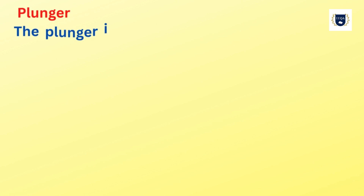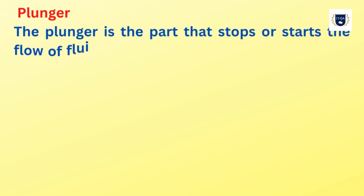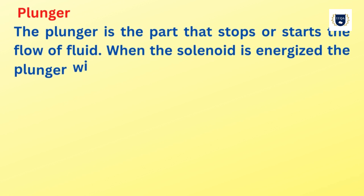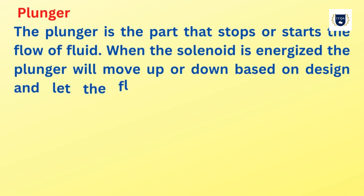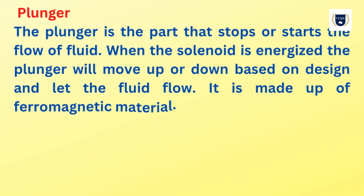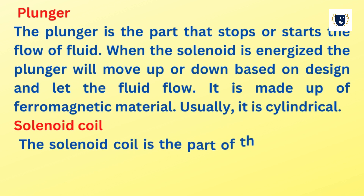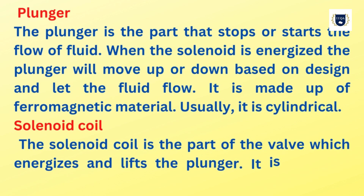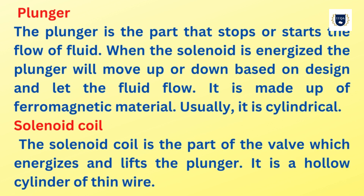Plunger: the plunger is the part that stops or starts the flow of fluid. When the solenoid is energized, the plunger will move up or down based on design and let the fluid flow. It is made up of ferromagnetic material and is usually cylindrical. Solenoid coil: the solenoid coil is the part of the valve which energizes and lifts the plunger. It is a hollow cylinder of thin wire.